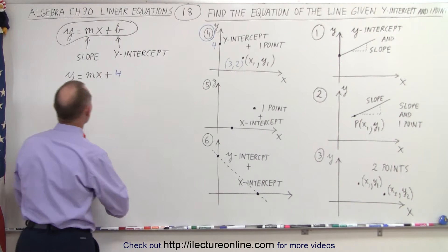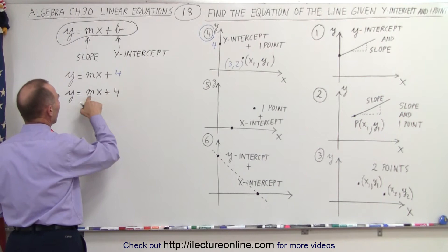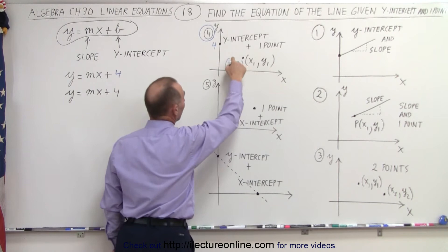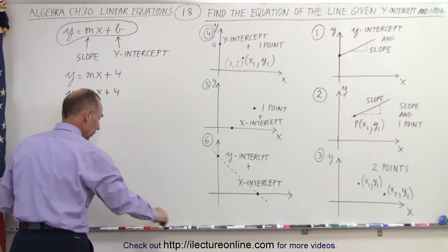Okay, so now that we have the intercept, let's rewrite the equation. So we have y equals mx plus 4. Now we need to find m. And so what we're going to do now is take the value of the one point that's given and plug the x and y coordinates in for the x and y in our equation.